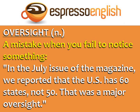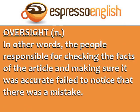An oversight is a mistake when you fail to notice something. In the July issue of the magazine, we reported that the U.S. has 60 states, not 50. That was a major oversight. In other words, the people responsible for checking the facts of the article and making sure it was accurate failed to notice that there was a mistake.